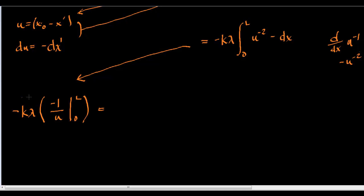And, now, we can rewrite this. The negatives are going to cancel. So, we'll get k lambda times, and I'm going to plug in for u, x naught minus x prime now. So, I get 1 over x naught minus x prime evaluated from 0 to l.